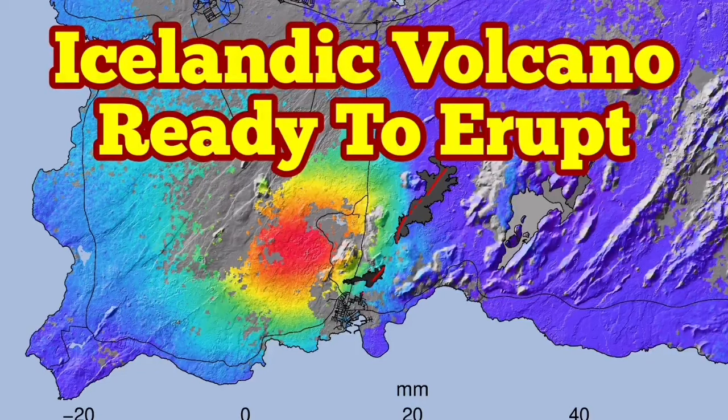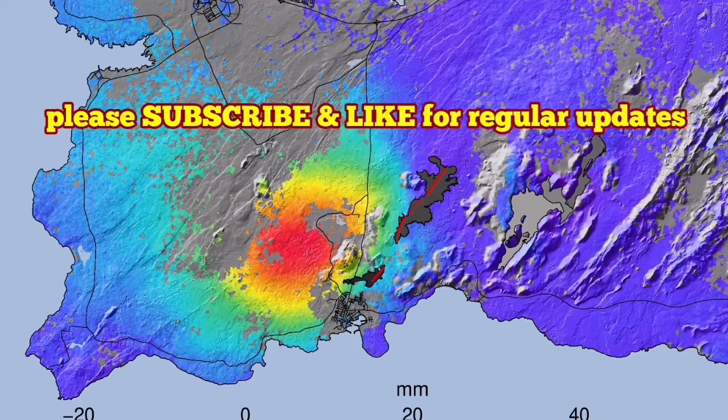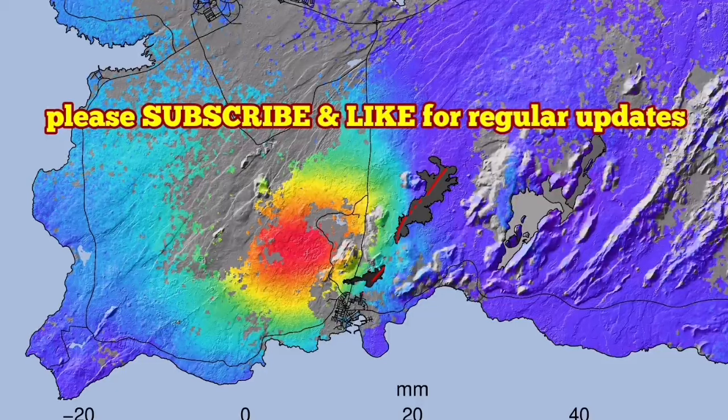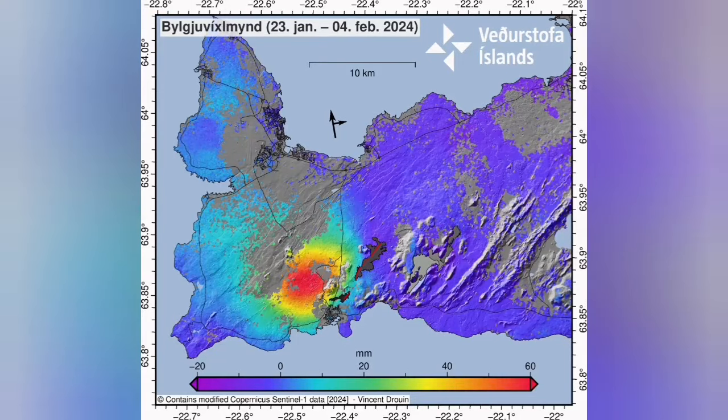The Icelandic volcano in the Reykjanes Peninsula related to the Svartsengi volcanic system is now ready to erupt for the third time.